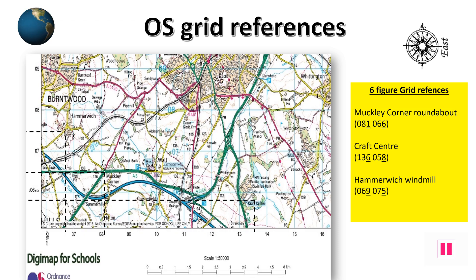Here we have a few worked examples to help us. In the south-west of the map, we find Mugly Corner roundabout along the A5, shown in green. Remember, go along the bottom and then up the side. So it is 08 and 1 tenth along and then 06 and 6 tenths upwards.